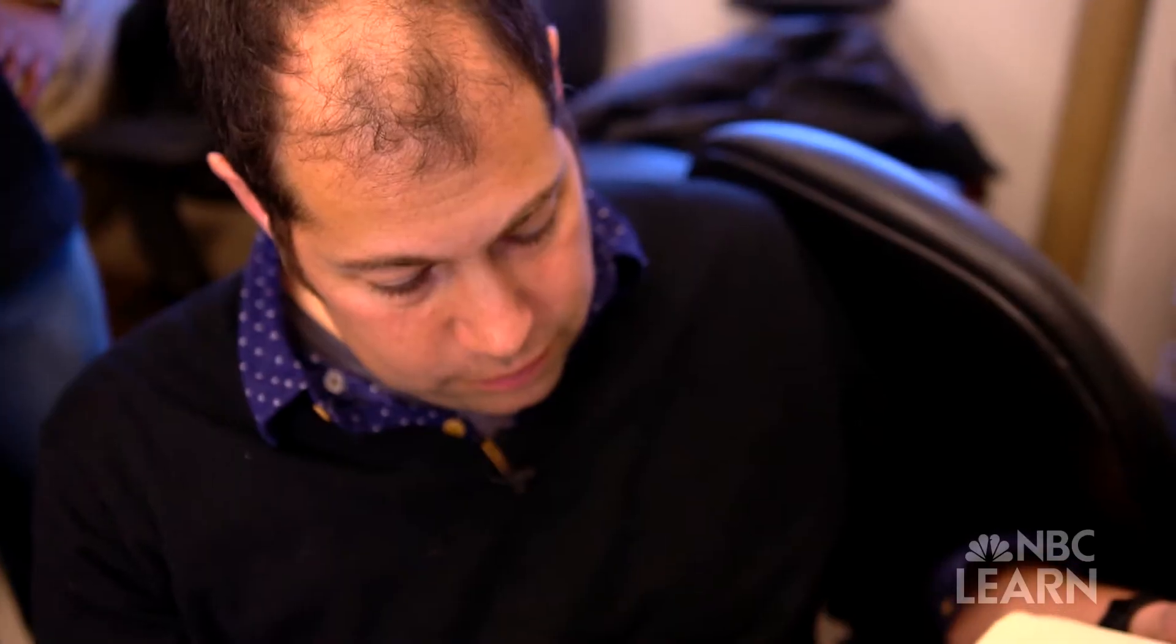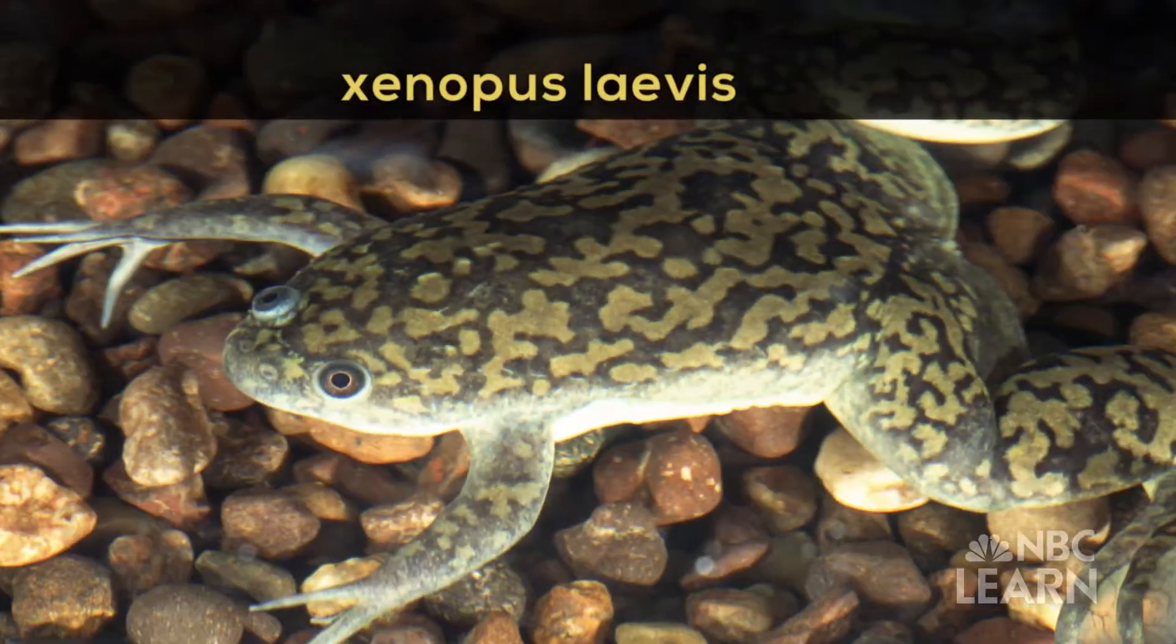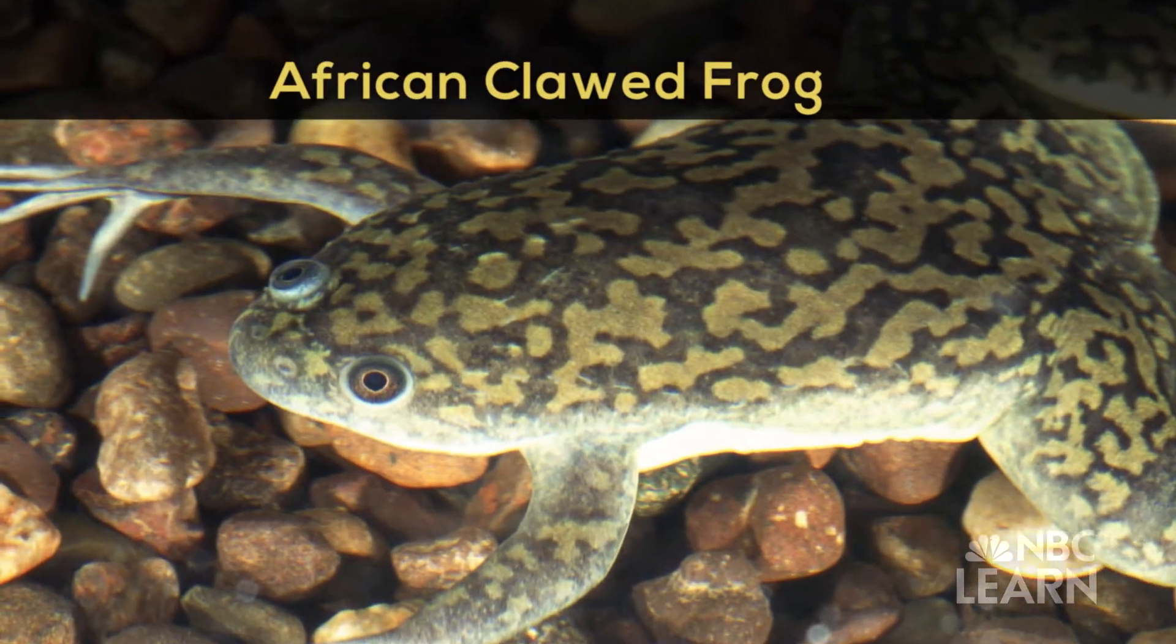To unlock answers about the development of neural circuits, Eisenman and the students in his lab are studying the simple structure and wiring of tadpole brains from a type of frog called Xenopus laevis, or African clawed frog.